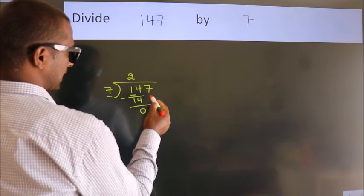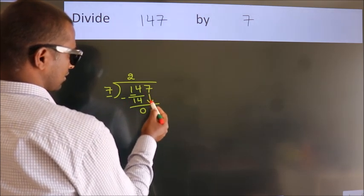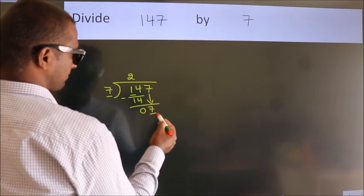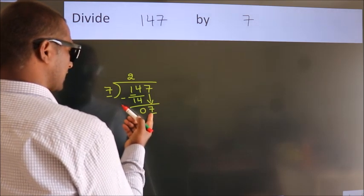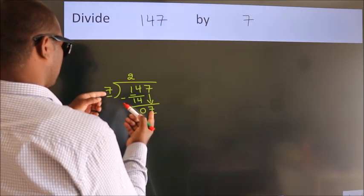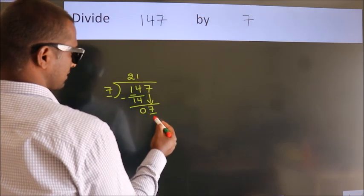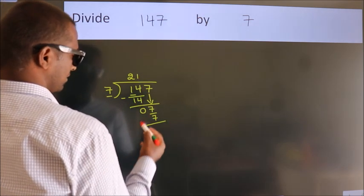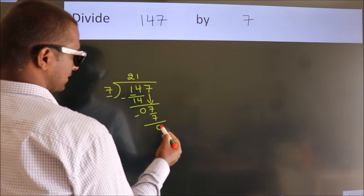After this, bring down the beside number, so 7 down. When do we get 7? In 7 table, 7 1s, 7. Now we subtract, we get 0.